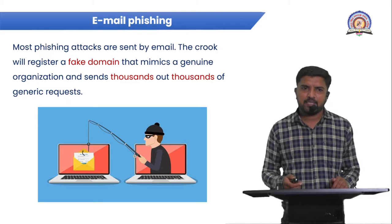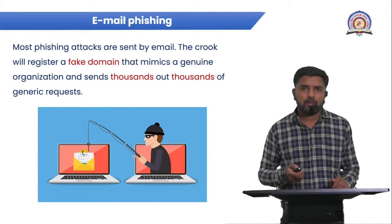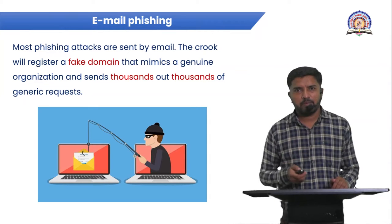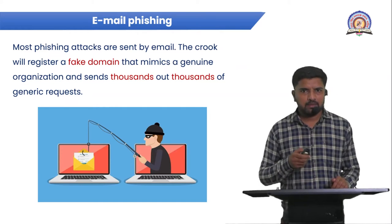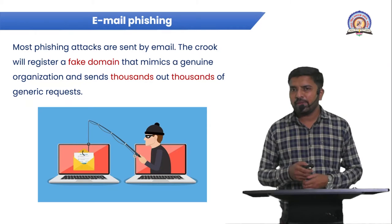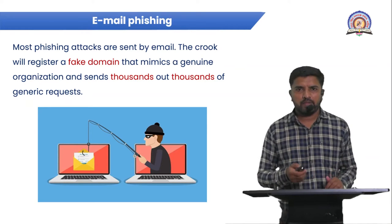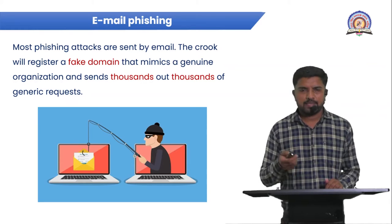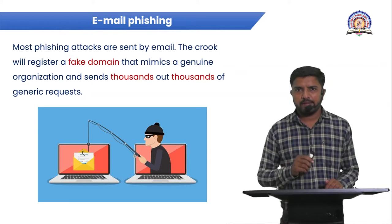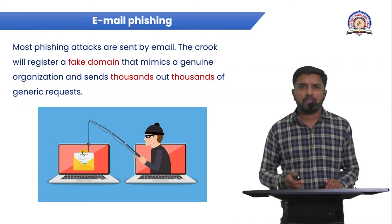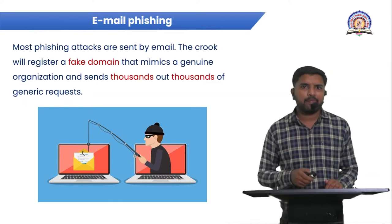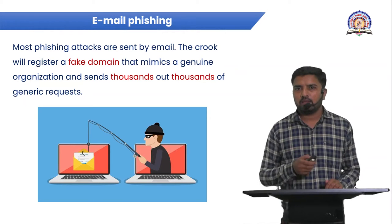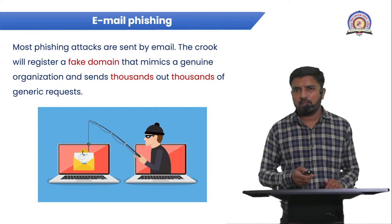The first part of phishing is email phishing. In email phishing, some fake domains are created by the attacker. After creating fake domains, contact is made with thousands of people — approximately 1,000 emails. Email requests are sent to people, and if those people reply to those emails, data loss occurs. That is email phishing.